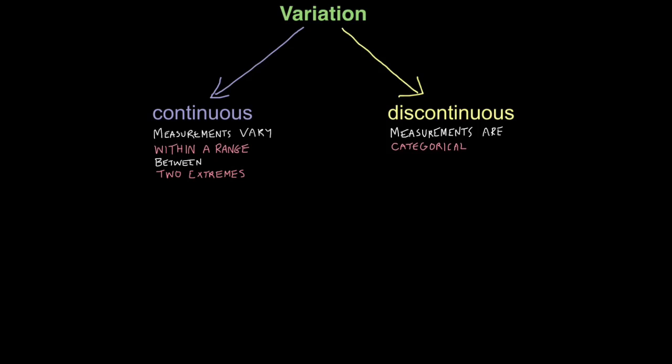There are two types of variation. Some features vary continuously, whereas others vary discontinuously. It's important that you get the right definition for these. So with continuous variation, measurements vary within a range between two extremes.